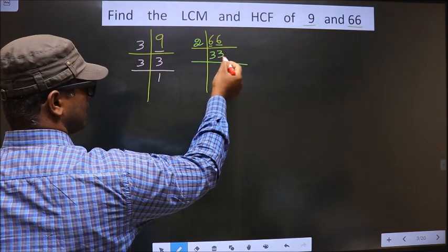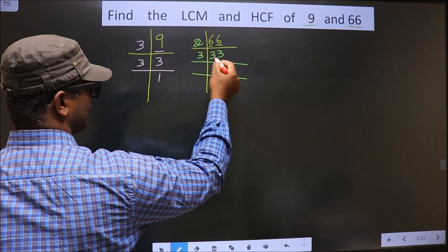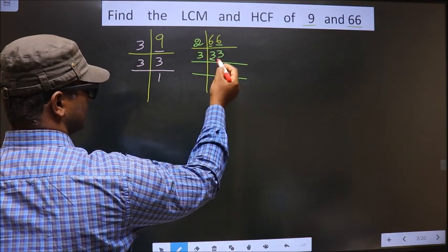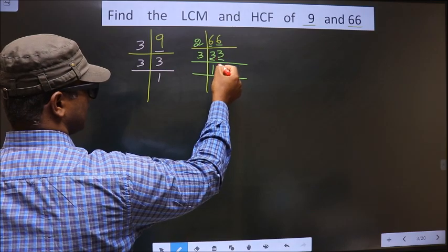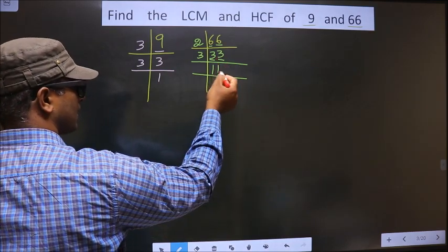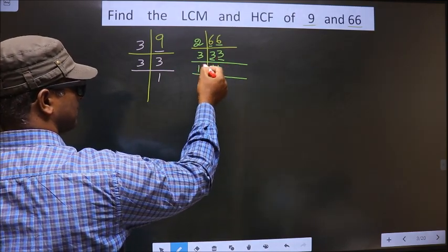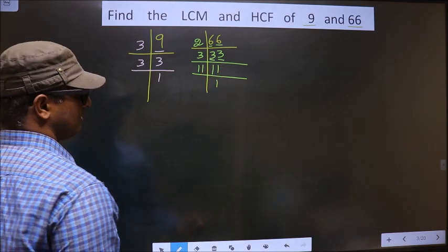Now both are 3s, so I take 3 here. First number is 3. When do we get 3 in 3 table? 3, 1 is 3. Next number is 3. When do we get 3 in 3 table? 3, 1 is 3. Now here 11 is the prime number, so we take 11 and 1.